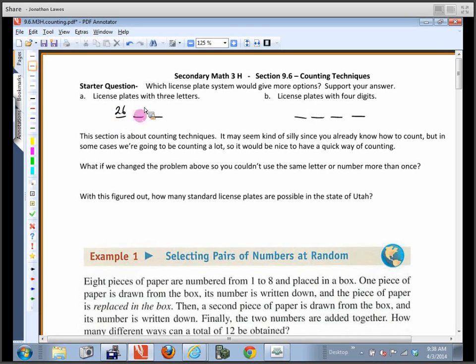And how many choices do I have for the next one? Another 26, right, because we didn't say we couldn't have repeats. So if I multiply those together, we'd have 26 times 26 times 26, or 26 cubed. That's a pretty darn big number. What is it? Okay, seventeen thousand five hundred seventy-six possibilities.